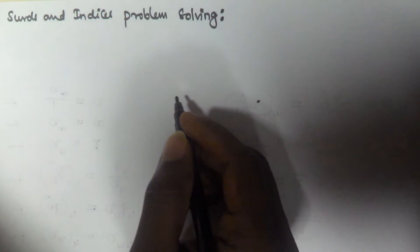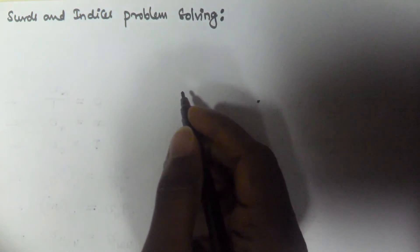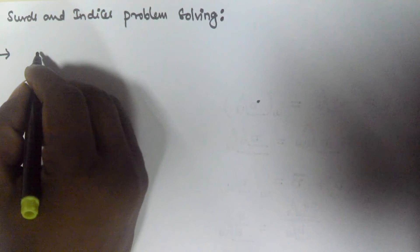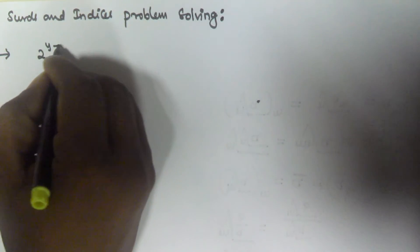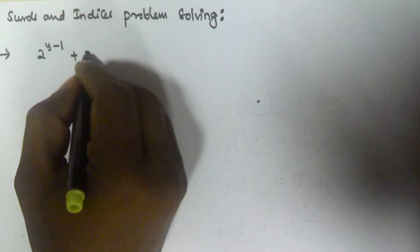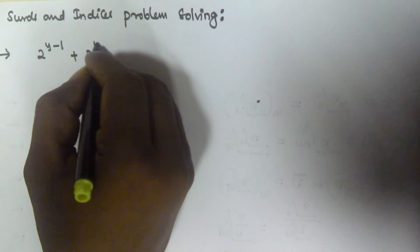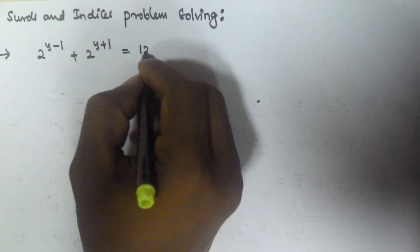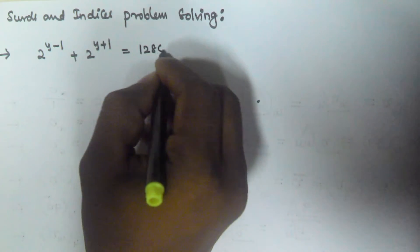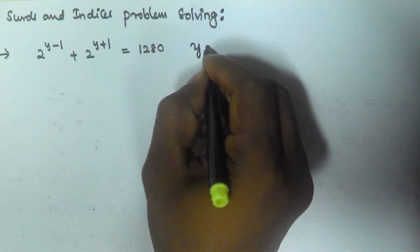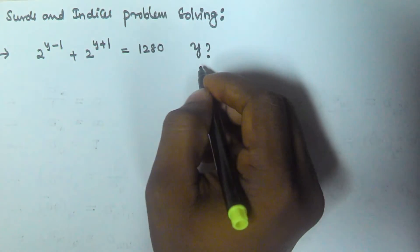Hello friends, in this video we will see some problems based on sets and indices. Let us consider a problem: we have 2 to the power of y minus 1, plus 2 to the power of y plus 1, is equal to 1280. We have to find the value of y.